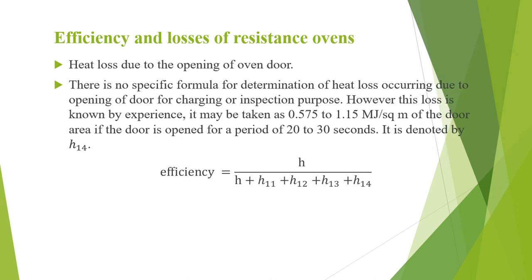Heat loss due to opening of the oven door, denoted H14: there is no specific formula for this loss, but it is known by experience and taken as 0.575 to 1.15 MJ per square meter of door area if the door is open for 20 to 30 seconds. Therefore, the efficiency is given by H / (H + H11 + H12 + H13 + H14).